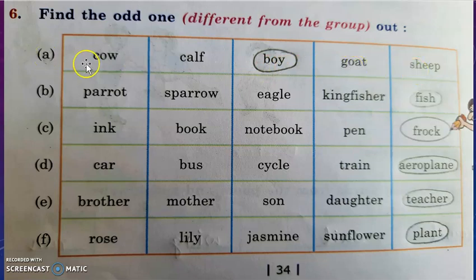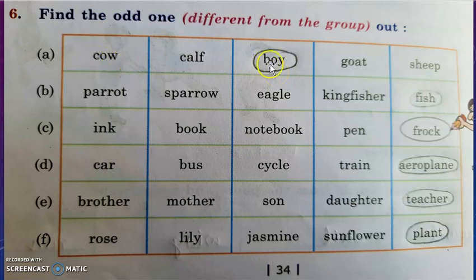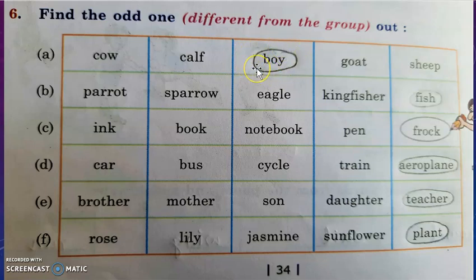Here, children, cow, calf, goat, and sheep are animals and the boy is a human being. So this boy is odd in this group — we have to circle it, as it is different from the group.